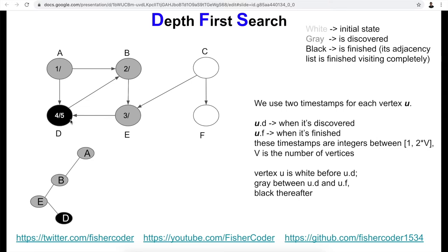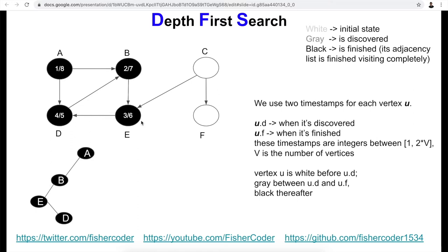Now we start backtracking. The next timestamp is six — e's finish time is six. We backtrack further: seven is the finish time for b. Continuing to backtrack, eight is the finish time for vertex a. So we've built a depth first tree along the path a → b → e → d, with finish times assigned as we backtrack.